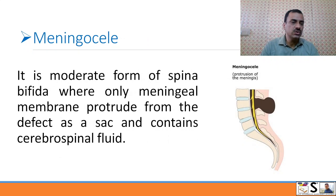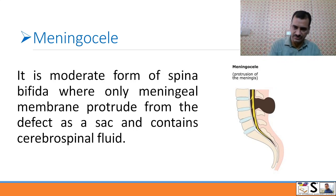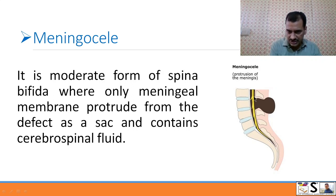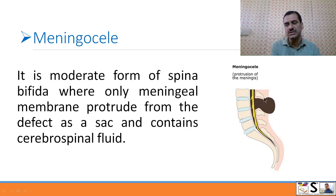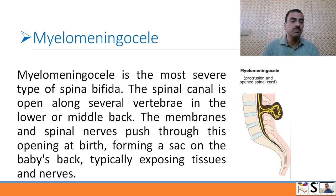The second type is meningocele. It is a moderate form of spina bifida where only the meningeal membranes protrude from the defect as a sac and contain CSF. The spinal cord remains inside, but its coverings and the CSF come out, covered by a membrane seen as a sac.